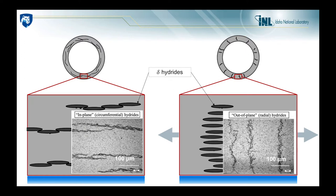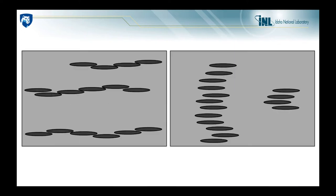This microstructural difference has been observed experimentally by several authors. The issue is that hydrides are very brittle, so the morphology of the hydride has a great impact on the propagation of cracks in the cladding.